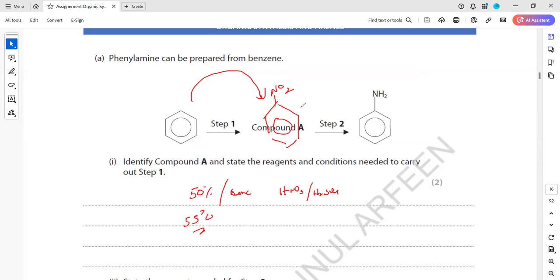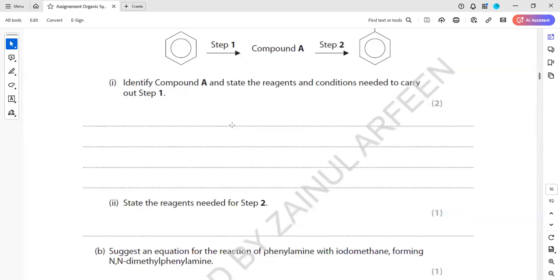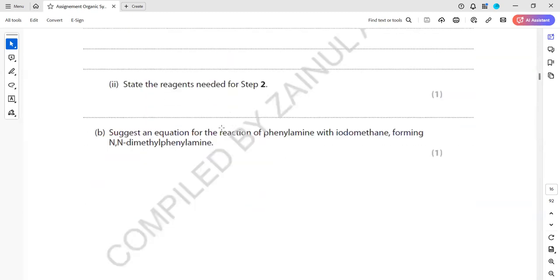Then step two, what we have to do for step two, it's a reduction. So for this reduction, we use tin and hydrochloric acid, concentrated hydrochloric acid that causes reduction of this nitrobenzene into amine, phenylamide. That's the answer.